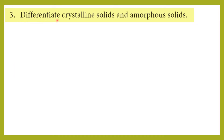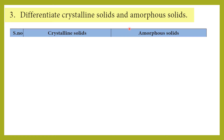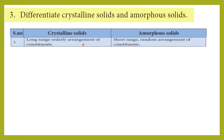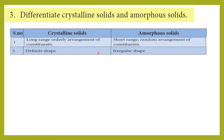Third question: differentiate crystalline solid and amorphous solid. Crystalline solids, examples: diamond, sodium chloride. Amorphous solids, examples: glass, rubber. First point: crystalline solids have long range orderly arrangements of constituents, whereas amorphous solids have short range, random arrangement of constituents.